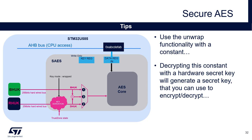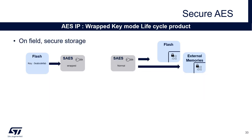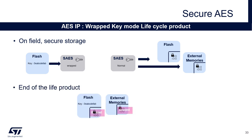In fact, you can avoid the provisioning phase. If you unwrap a constant, this will generate a secret key stored in the key register that can be used in normal mode afterward. This changes the product lifecycle slightly: there is no provisioning phase, and in the field you just need to unwrap the constant to encrypt or decrypt assets. However, at end of life, you can't erase this constant, so you will have to erase all the encrypted assets.